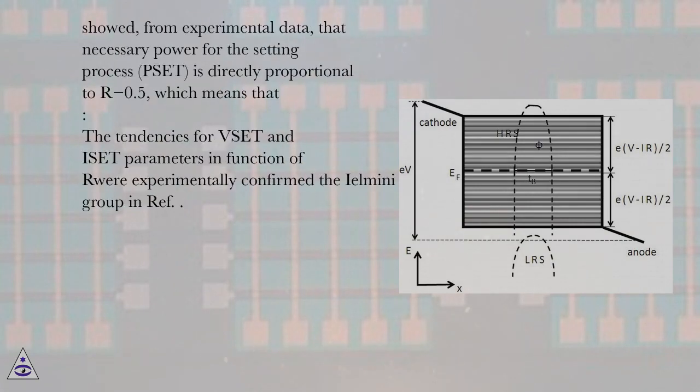Ilmini et al. showed, from experimental data, that necessary power for the setting process, PSET, is directly proportional to RHRS minus 0.5, which means that the tendencies for VSET and ISET parameters in function of RHRS are experimentally confirmed by the Ilmini group in reference.